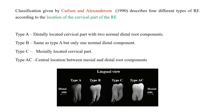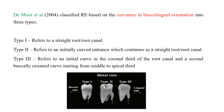Several classifications have been given by Karl Alexanderson for radix entomolaris based on the location of the cervical part. Type A: distally located cervical part with two normal distal root components. Type B: same as Type A but with only one normal distal component. Type C: mesially located cervical part. Type AC: central location of the extra root between mesial and distal root components.